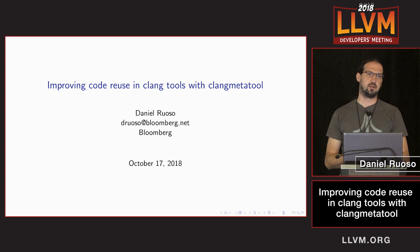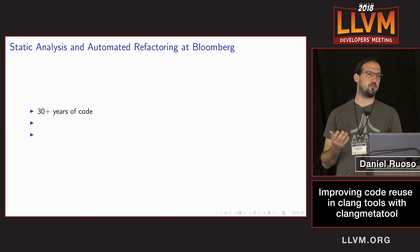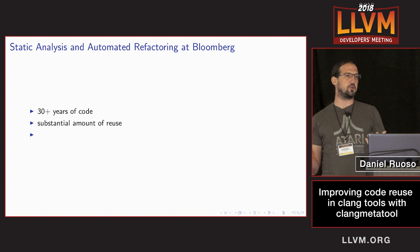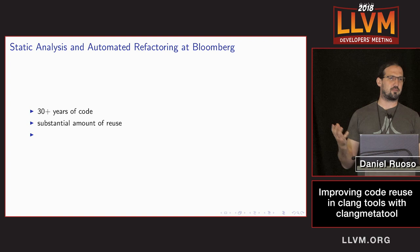I should start with why we're doing this, and it's not that surprising. Bloomberg is a company with 30-plus years of code across several generations of developers. There's a substantial amount of code reuse across different units of the organization — code that ends up linked in the same executables. It's quite commonplace for companies this size to have four-gigabyte executables, and Bloomberg is not an exception.